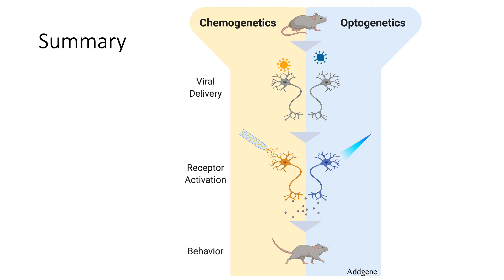To summarize, both chemogenetics and optogenetics are tools that can be used to manipulate neural activity in the pursuit of hypothesis testing. While not covered in this video — because it will be covered in its own future video — virus-mediated gene delivery can be used to express these constructs in a specific cell type or tissue. After they are expressed, the receptors can be activated through application of a ligand or light to ultimately manipulate neural activity, brain function, and behavior. Thank you.